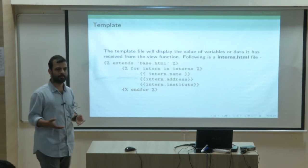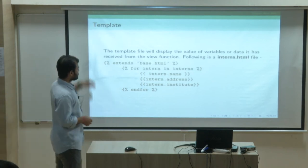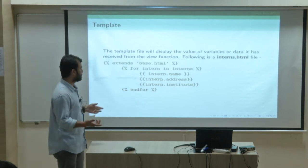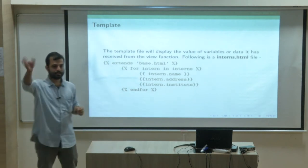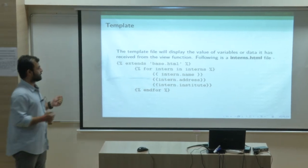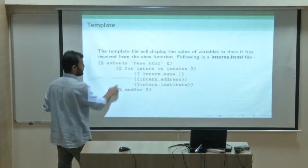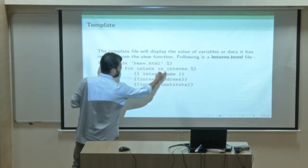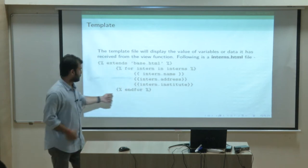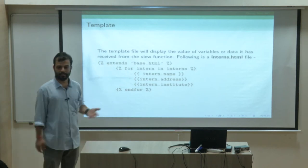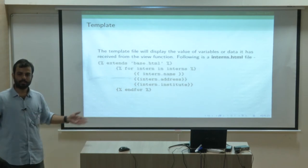Every URL called to this server will be searched in URL patterns. If a URL is not available in URL patterns, it gives you a 404. This is how you display it in interns.html. Django has a built-in template language called Django Template Language. Every conditional syntax uses the percent-bracket sign, and every variable uses double-bracket signs. The interns variable is available in the template because the function is sending it. We write a for loop to loop through the interns, and each intern has a name, address, and institute displayed with HTML tags.